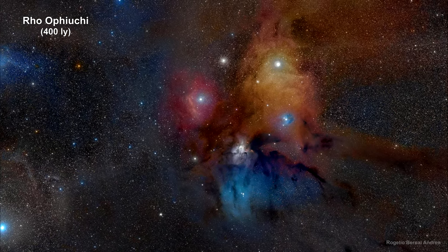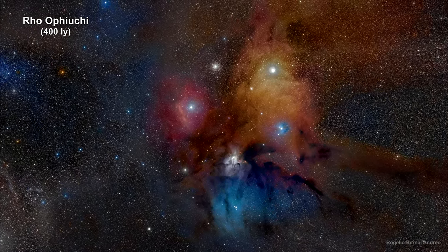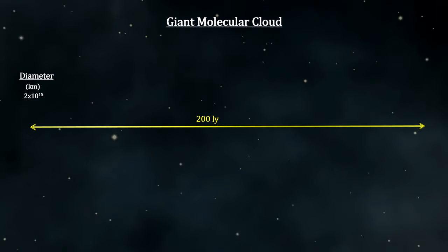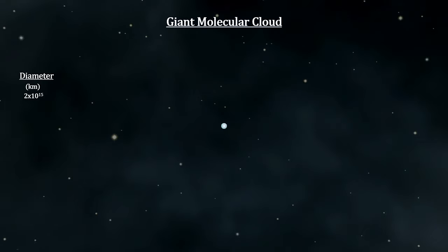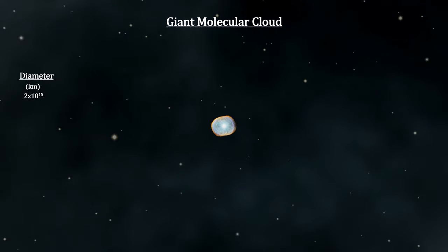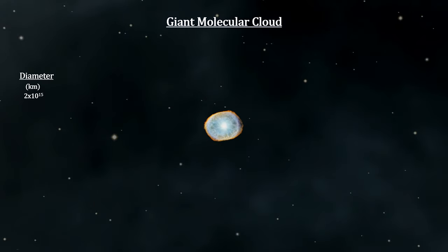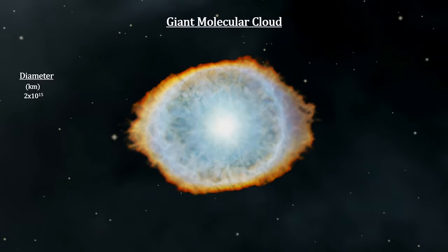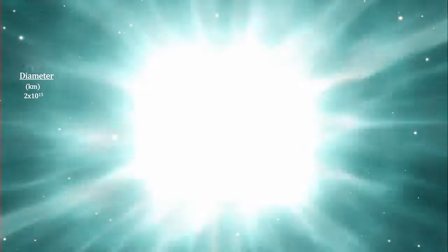Giant molecular clouds can be as large as 600 light years wide. This illustration is 200 light years in diameter. They contain mostly hydrogen and some helium, but they are also seeded with some heavier elements, such as oxygen, carbon, iron and others, from the dusty remains of earlier generation stars that ended as planetary nebula or supernova remnants.